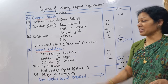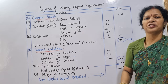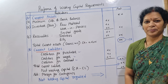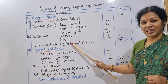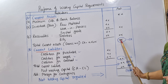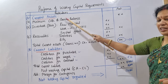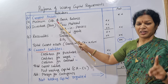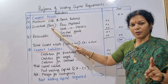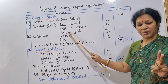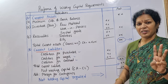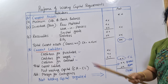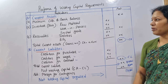The third component of current assets is receivables — debtors and bills receivable. So under current assets, we have: A — minimum cash balance and bank balance; B — inventories (raw material, work in process, finished goods); C — receivables (debtors and bills). These are placed in the inner column, with the total in the outer column.